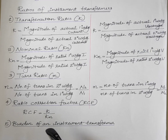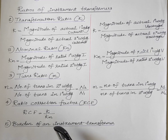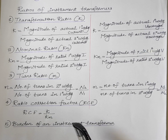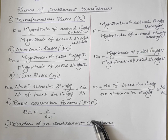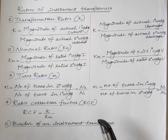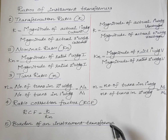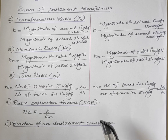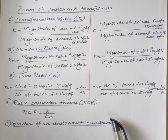Burden means the load across the secondary winding terminals. Burden is specified as volt ampere. The rated burden of an instrument transformer is defined as the maximum loading in volt ampere which may be applied across the secondary terminals such that errors do not exceed the limits.